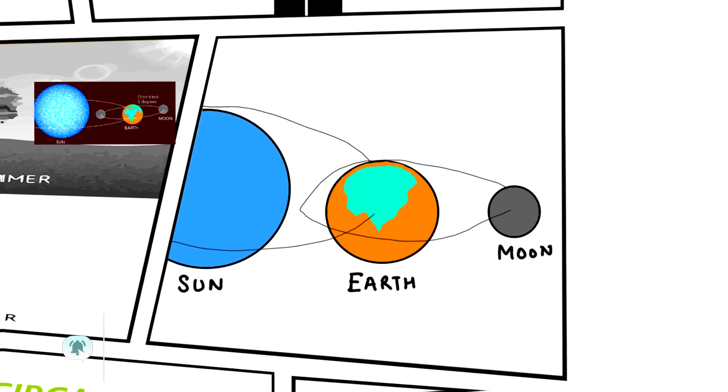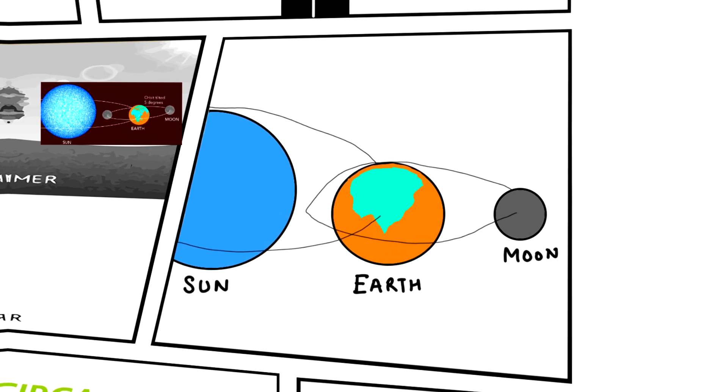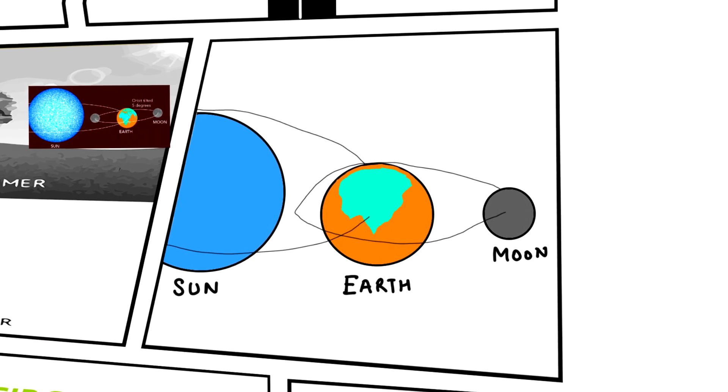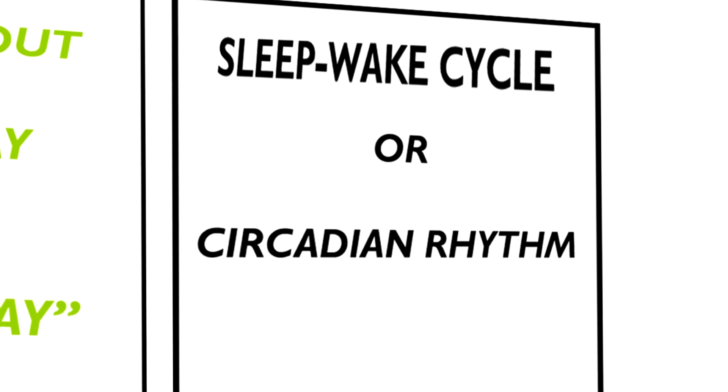Some cycles are monthly, like the women's menstrual cycle, while others are far shorter, like the beating of your heart. Some biological cycles take place on a daily basis, that includes the rise and fall of your blood pressure and your sleep-wake cycle.